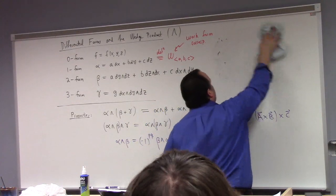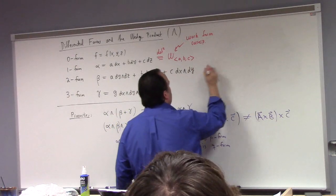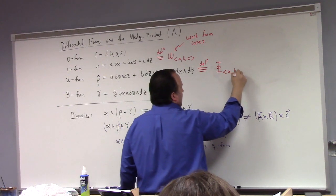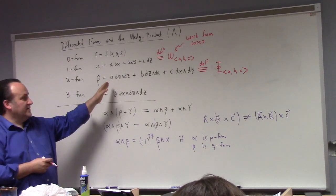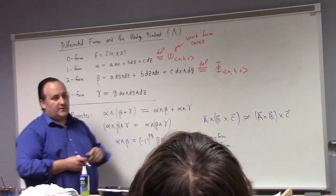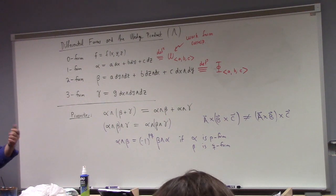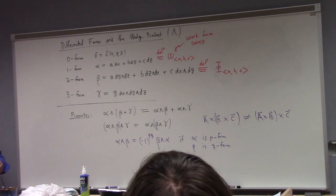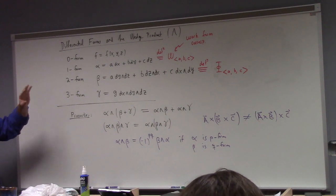There's also a so-called flux form correspondence. A two form in three dimensions corresponds to phi of (a, b, c). Every two form in three dimensions needs three component functions. It's a quirk of three dimensions that both one forms and two forms take three component functions to define. In four or five dimensions, it's not so — there are more two forms. That's the flux form correspondence.